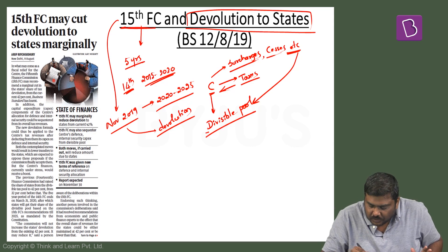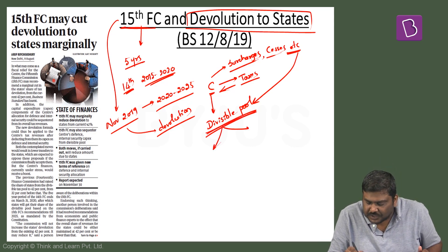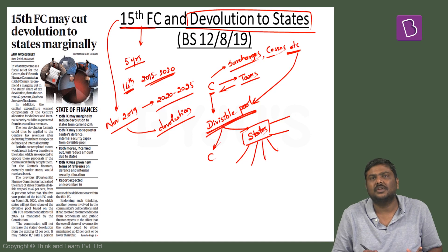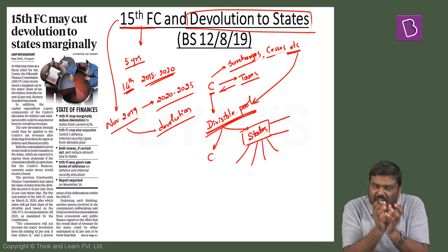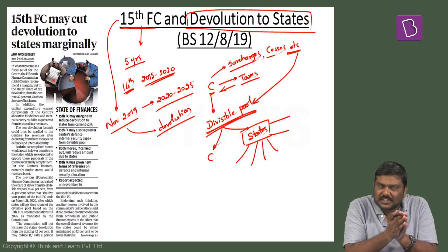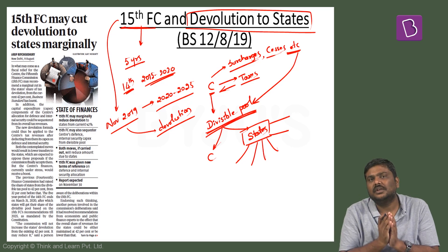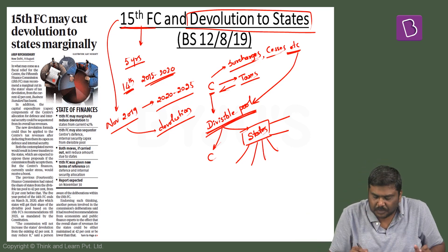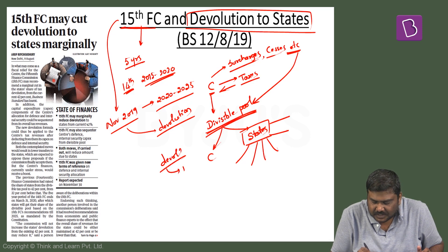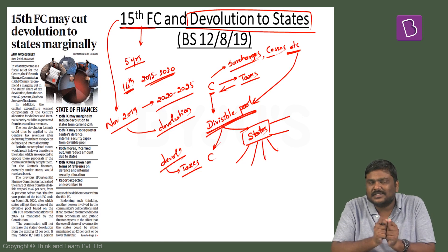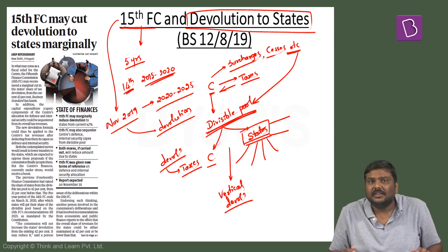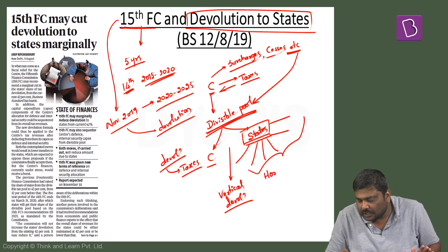Whatever taxes are pooled into this fund are first distributed between the center and the states, and whatever share goes to all the states must again be distributed amongst them. From the Central Divisible Pool, first the division happens between center and states — this is called vertical devolution. Then whatever share is allocated to states is distributed amongst all the states — this is called horizontal devolution.